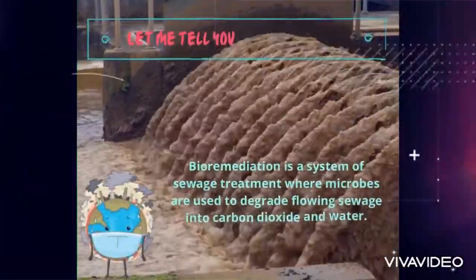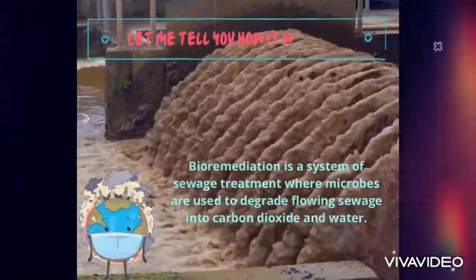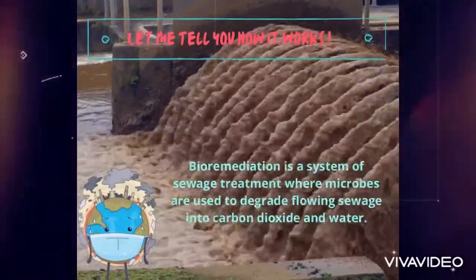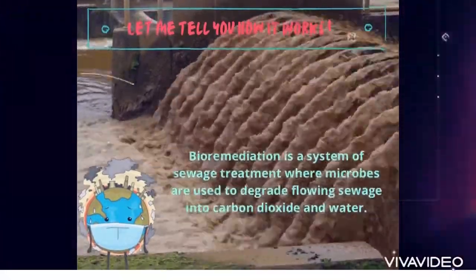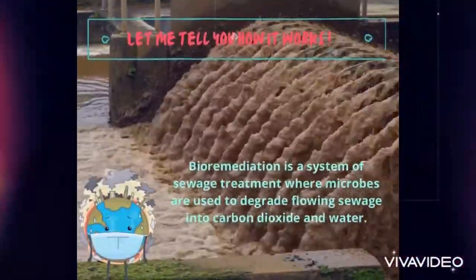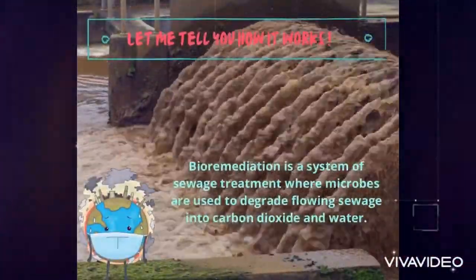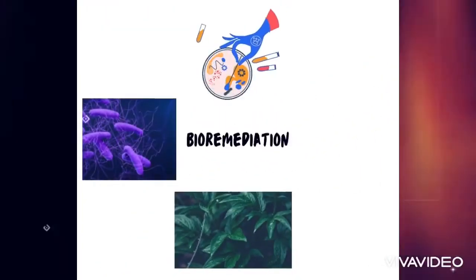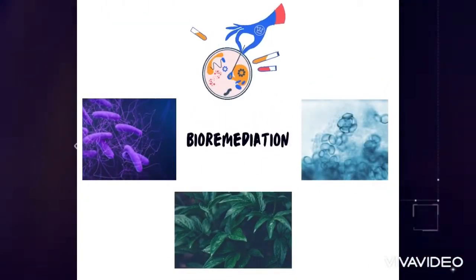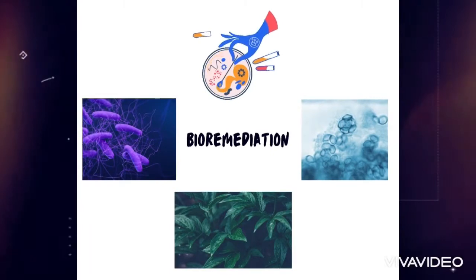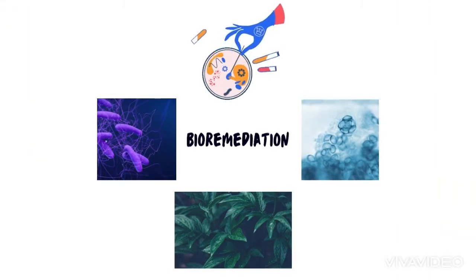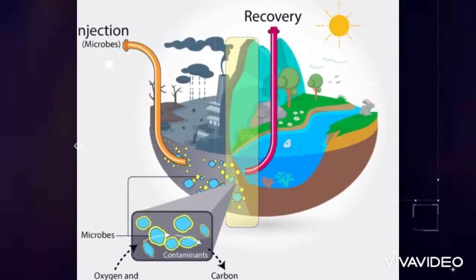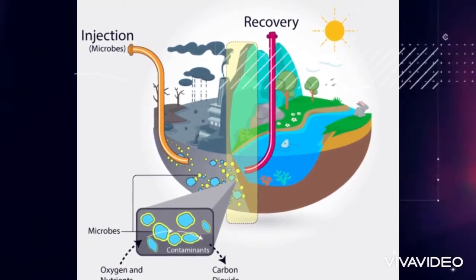Let me tell you how it works. In simple terms, bioremediation is a system of sewage treatment where microbes are used to degrade flowing sewage into carbon dioxide and water. The process uses naturally occurring bacteria, fungi, or plants to degrade substances that are hazardous to human health or the environment. It takes place in open drains without displacement of sewage.